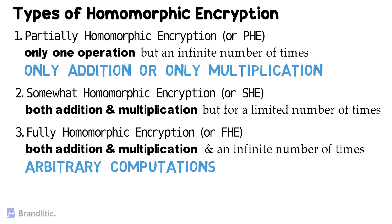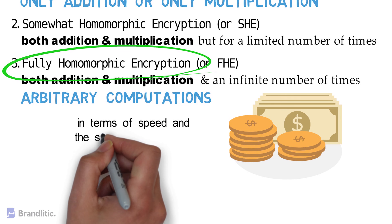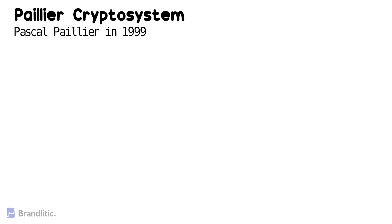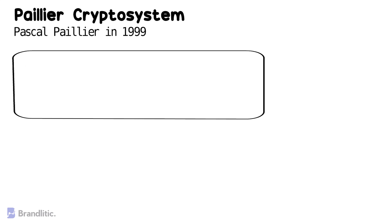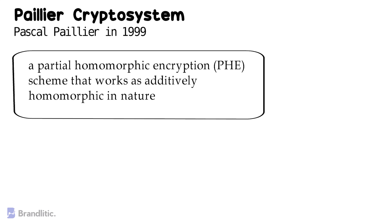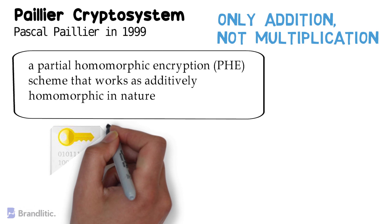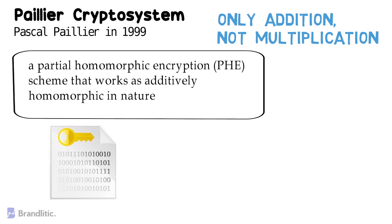You might be thinking that FHE, or fully homomorphic encryption, is the best — but not exactly. The major problem with fully homomorphic encryption is cost efficiency, both in terms of speed and storage requirements compared to plaintext operations, which is something businesses care about. Next, let's look into the Paillier cryptosystem, invented by Pascal Paillier in 1999. It is inherently a partially homomorphic encryption scheme that works as additive homomorphic in nature. It supports only the addition of two ciphertexts and not multiplication between them. A plaintext number can only be added or multiplied to the ciphertext. Calculations performed using the Paillier cryptosystem take place while the data is encrypted, and we can verify the integrity of the result each time by decrypting it using a private key.